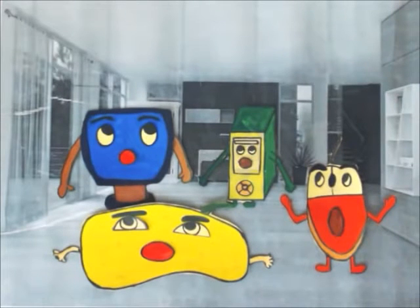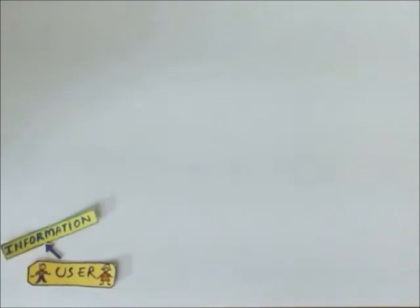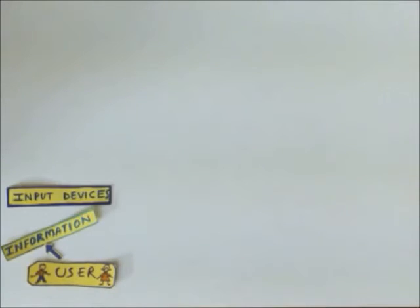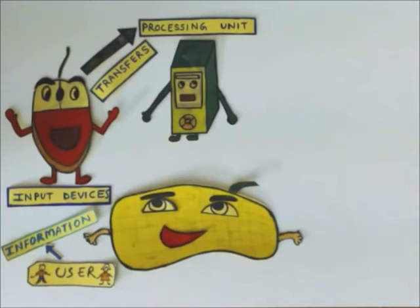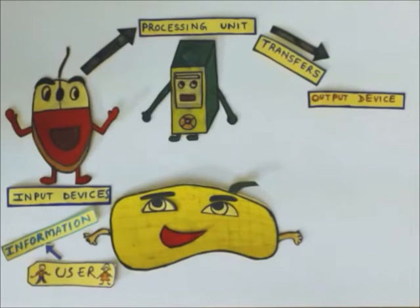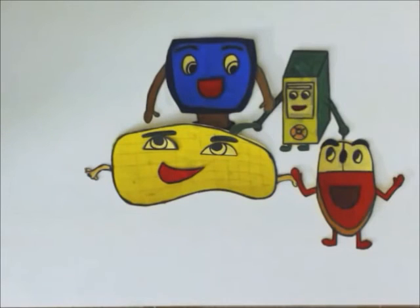All components are equally important. When the user enters information through input devices like the mouse and keyboard, it goes into the CPU where all the processing takes place, and then the result can be seen on the output device — the monitor. No single component can work without the others; together they form a computer.